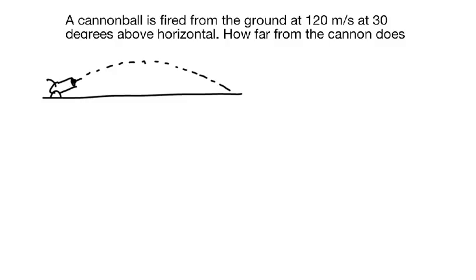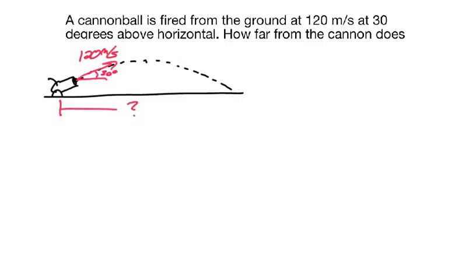I also think it's useful to include some of the given information on the diagram itself. For instance, I would write that this bowling ball is initially traveling at 120 meters per second at an angle of 30 degrees above horizontal. And the fact that we're looking for this distance here from where the ball is launched to where it hits the ground.